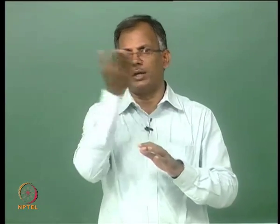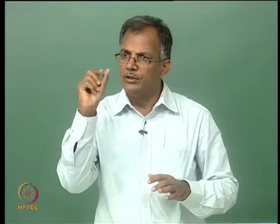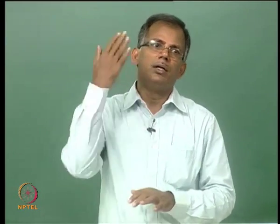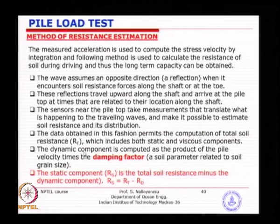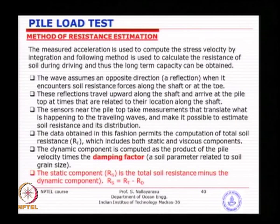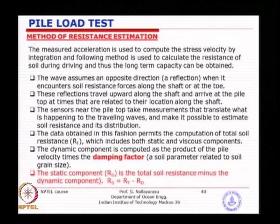Calculation of static resistance is possible only when you have the total resistance from the calculated force, minus the dynamic resistance using an assumed value of damping. Some value of damping has to be taken depending on the representative soil layers. For multi-layered soil — for example clay and sand — you do a weighted average of the damping values to calculate back the dynamic resistance. Total resistance minus dynamic resistance gives the static resistance at the time of driving, and then you extrapolate to long-term capacity based on assumptions of remoulding or setup.